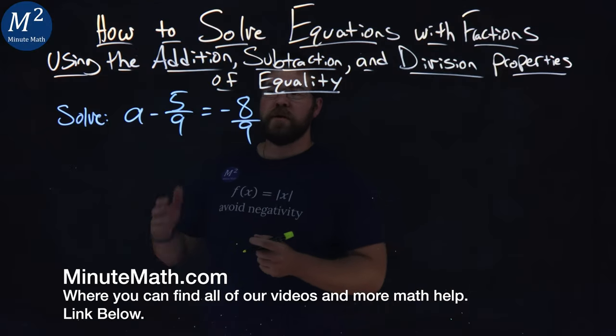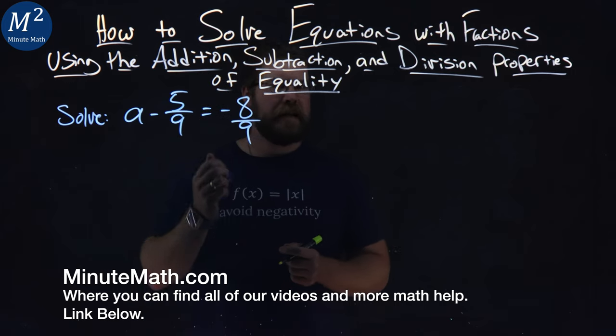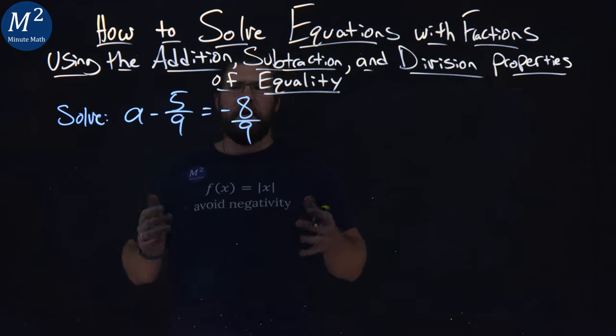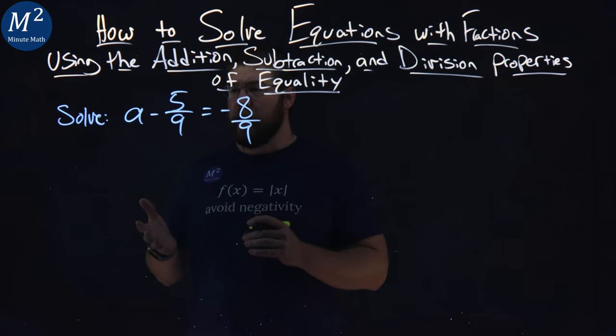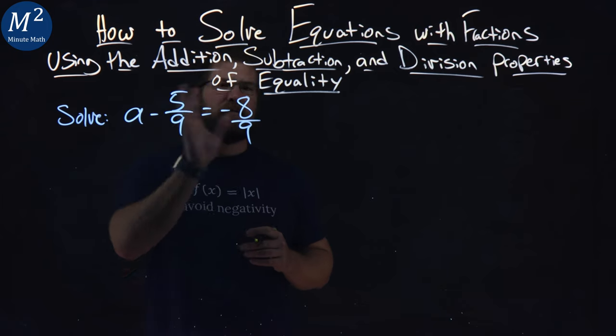We're given this problem right here. We want to solve a minus 5/9 equals negative 8/9. Now, like solving any equation, we want to get our variable by itself. So if I want to get a by itself, I have to move the 5/9 to the right.